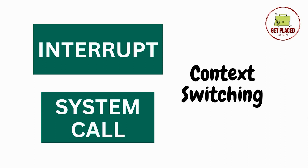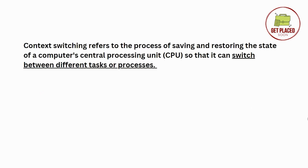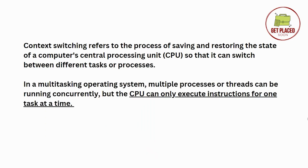Now let's understand how context switching works and look at the base definition. Context switching refers to the process of saving and restoring the state of a CPU so that it can switch between different tasks or processes. Imagine there are two processes and shifting from the first process to the second is happening — the first step is to save the state of the first process. In a multitasking operating system, multiple processes or threads can run concurrently.